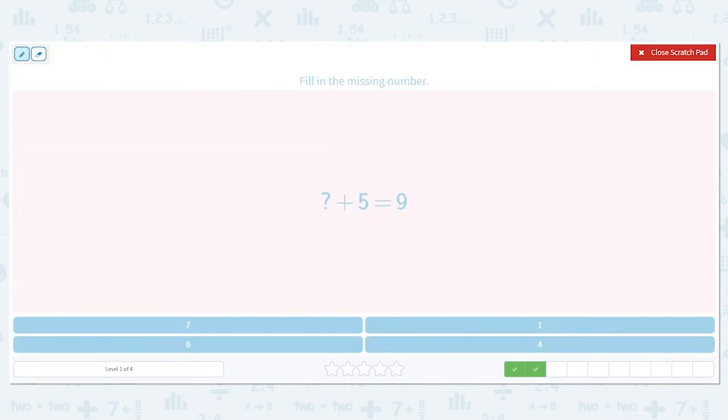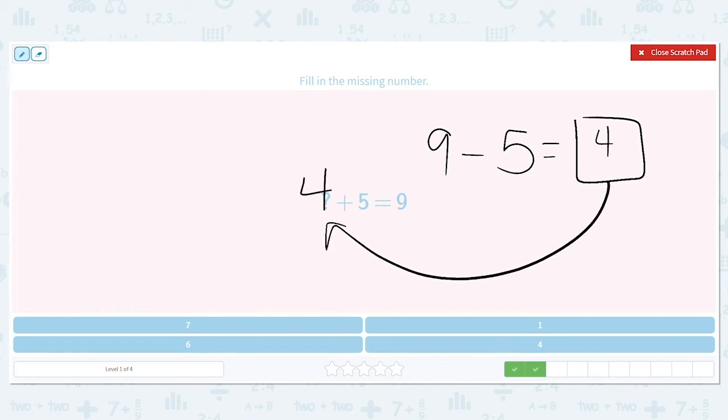But I like to use my subtraction. So I will work backwards. I do 9 minus 5 equals what? What is 9 minus 5? It's 4. So that means 4 goes here. 4 plus 5 equals 9. I'm checking it. I know my answer is correct.